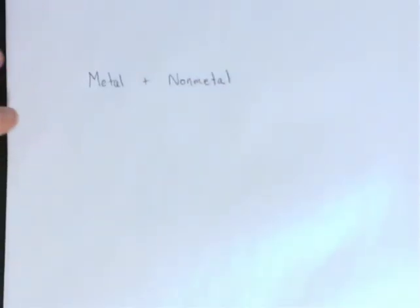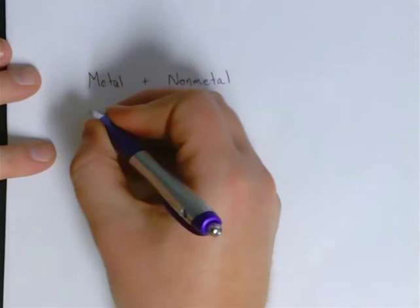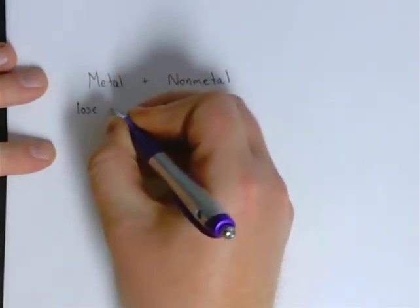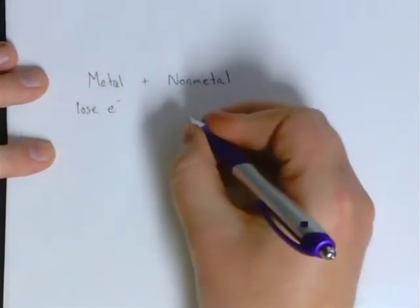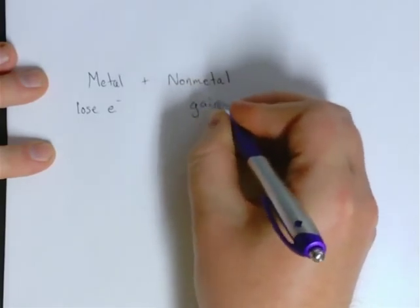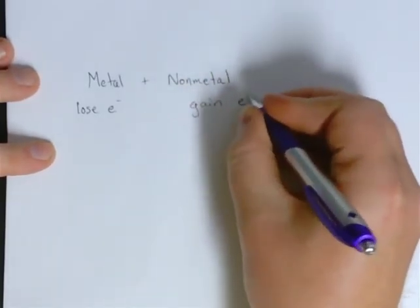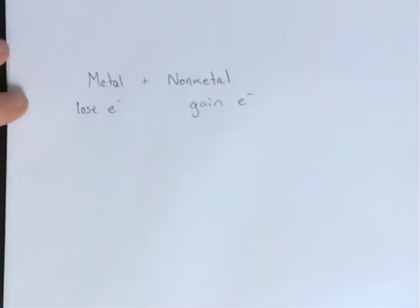What we've learned previously about metals and non-metals is that metals are going to lose electrons and non-metals are going to gain electrons. This means we need to understand how to do Lewis dot diagrams in order to do this properly. If you know how to do the Lewis dot diagram for an element, you should be able to figure out the ionic formula for a substance.